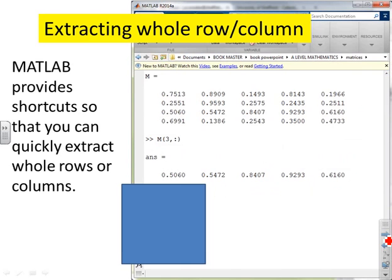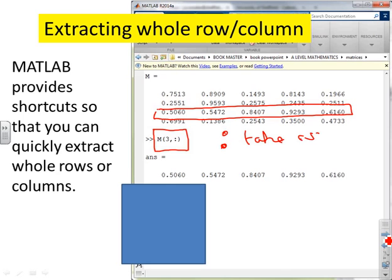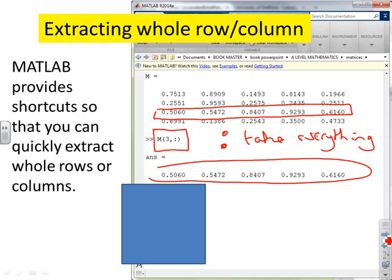What if I want to extract a whole row or a whole column? Well, MATLAB provides shortcuts for you so that you can do this easily. And here we're showing the shortcuts. If you look, you'll see the command I've written is M(3, colon). Well, before the comma tells me about rows. So that's saying I want the third row because I've got 3 before the comma. And then the comma colon, so the colon basically means take everything. That's what the colon means. So in other words, give me all the columns. And you'll see the answer down here is it's given me the whole of the third row because I've said I want all the columns in that row.